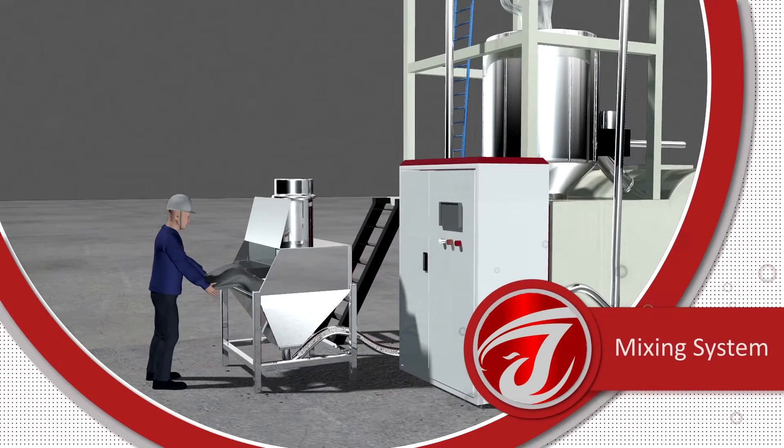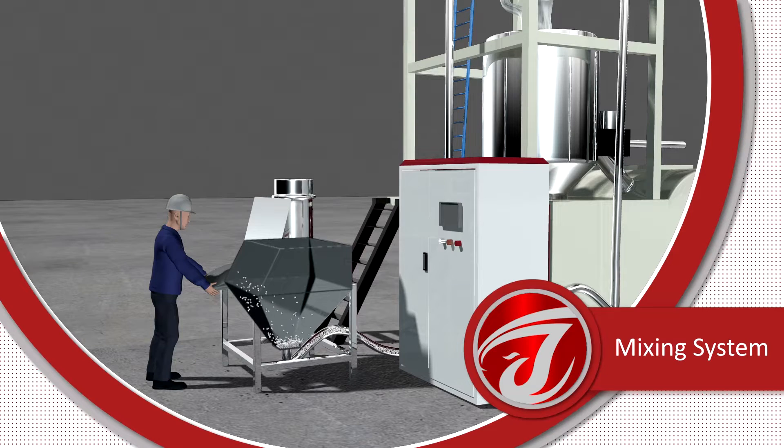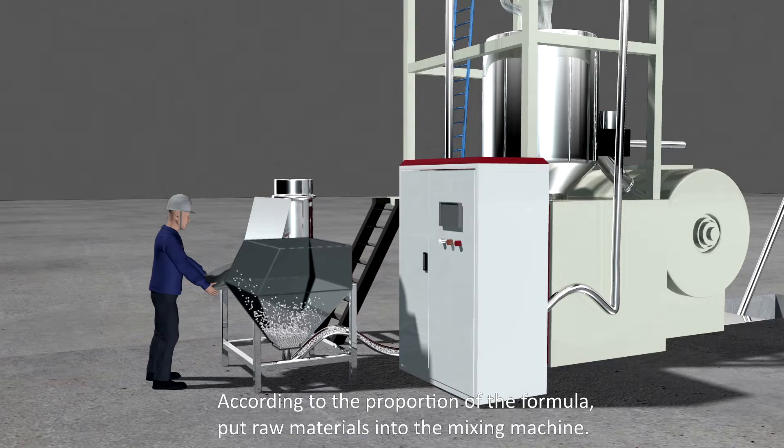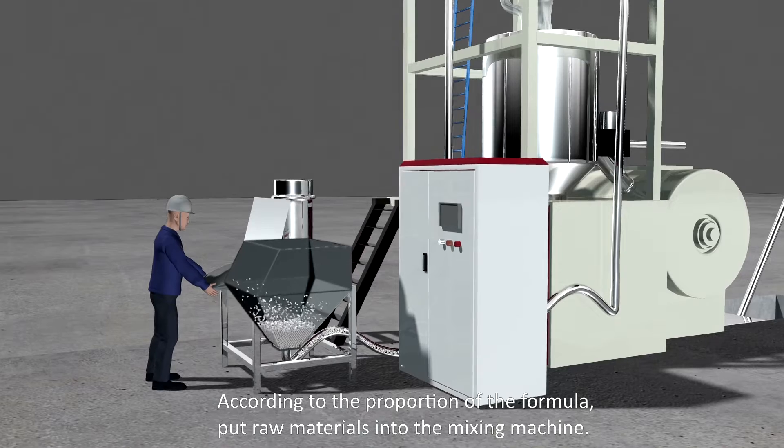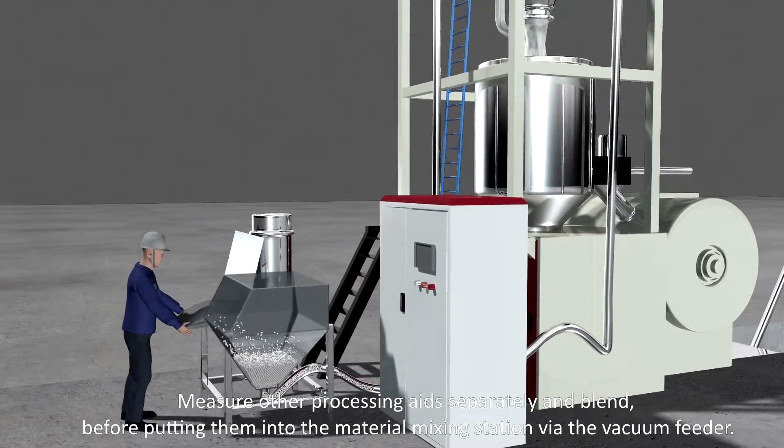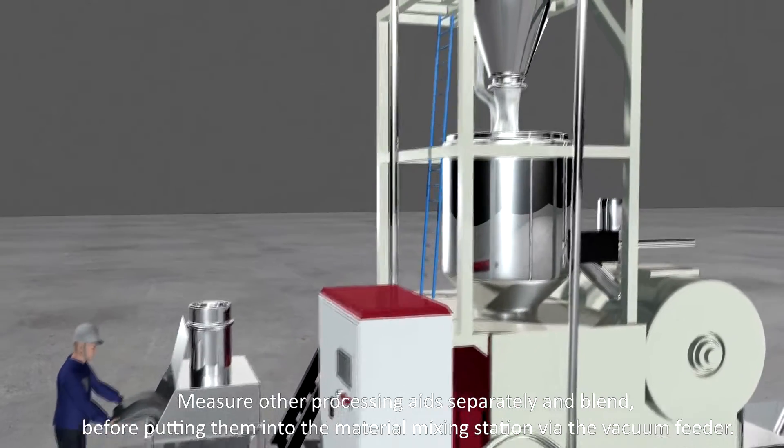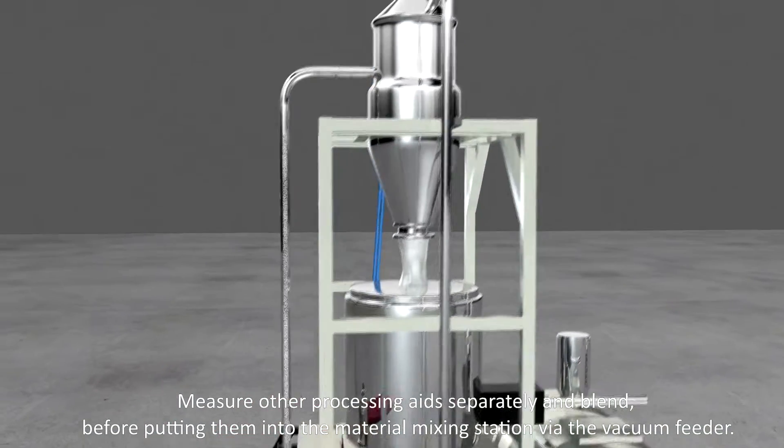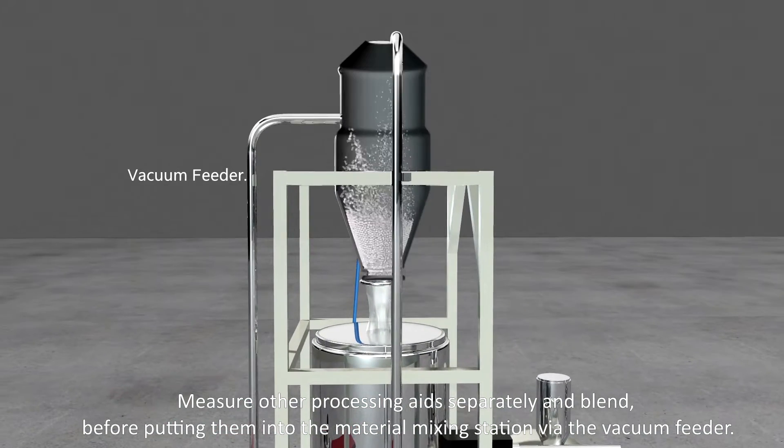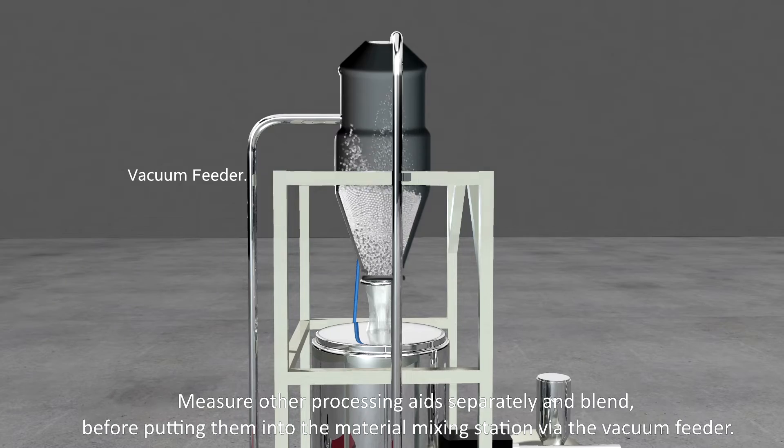Mixing system. According to the proportion of the formula, put raw materials into the mixing machine. Measure other processing aids separately and blend before putting them into the material mixing station via the vacuum feeder.